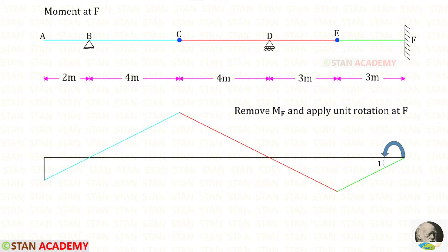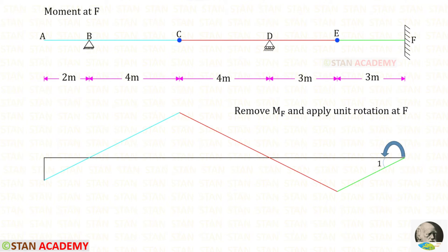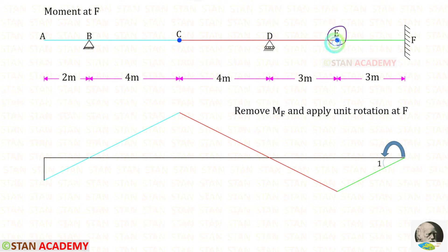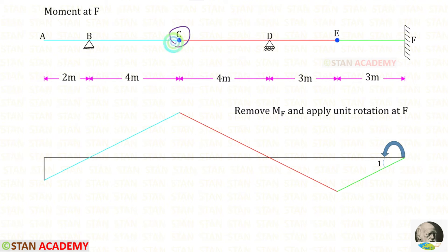First, we are going to draw the ILD for the moment at F. From point F, we have to remove MF and we have to apply unit rotation. You can see that I have applied unit rotation in the anti-clockwise direction. So the segment FE rotates by unit angle. In point E there is a hinge, and it will go downwards. And the segment ABC will go like this.